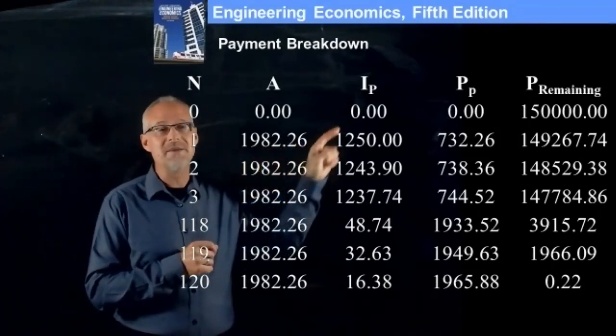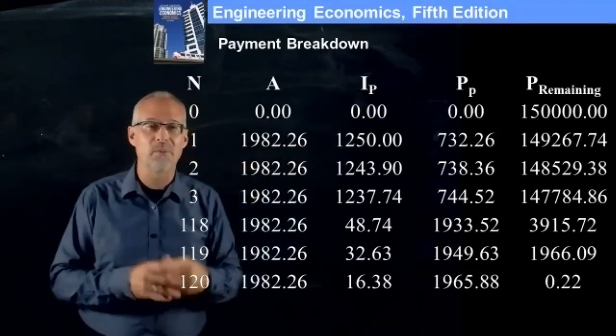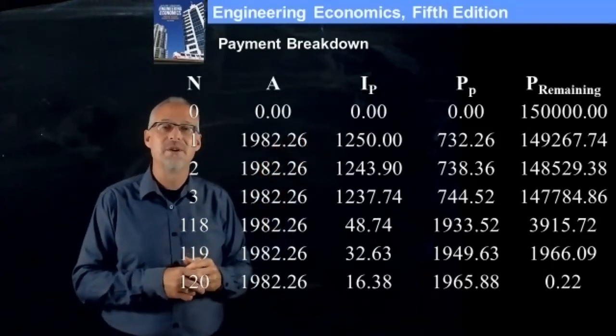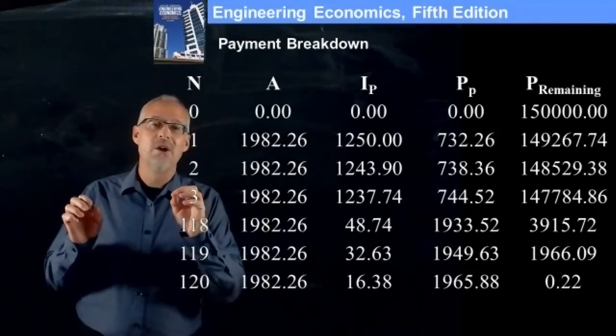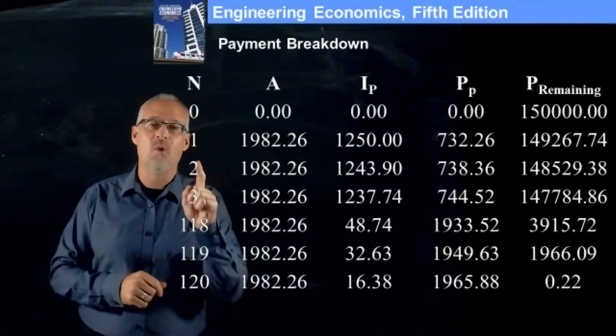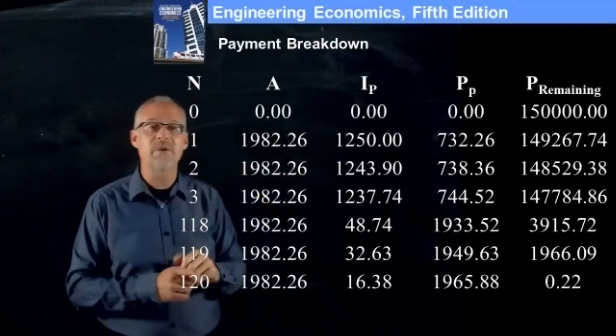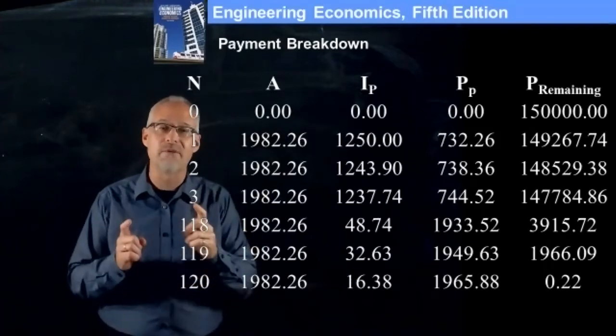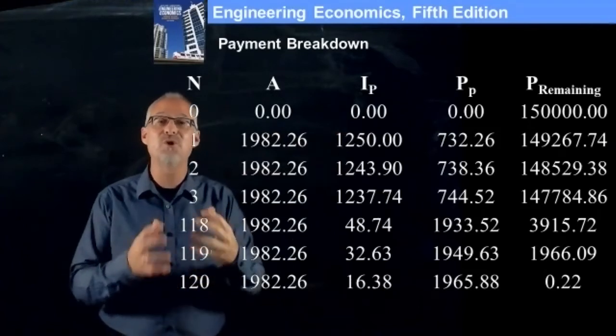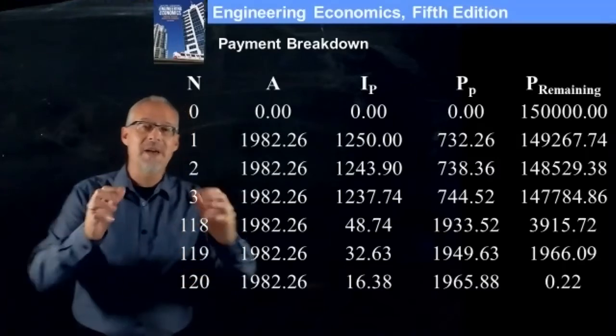I_P is the interest on the P, which sometimes people call it the principal of the loan. But if we have $150,000 and we have a 0.833333% interest in one month, if you multiply 0.833333% by 150,000, you'll realize that in that month, $1,250 of interest has accumulated.